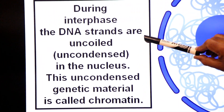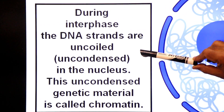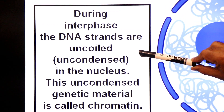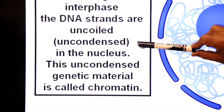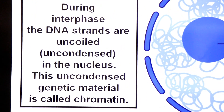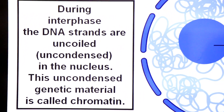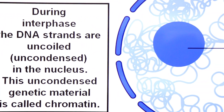During interphase, the DNA strands are uncoiled and uncondensed in the nucleus. This uncondensed genetic material is called chromatin.